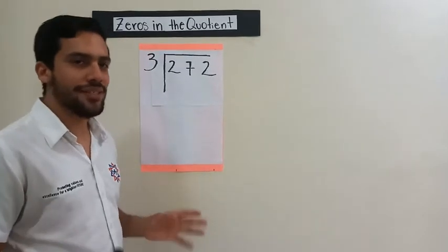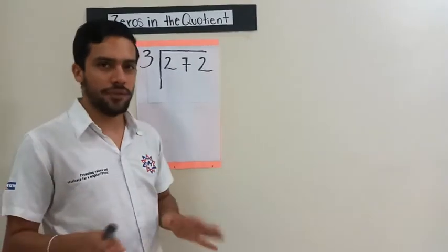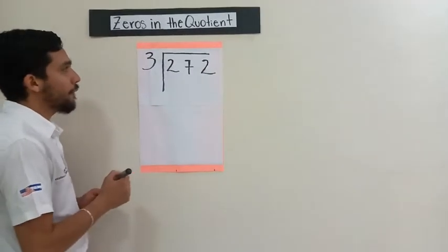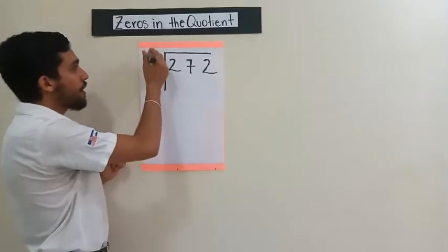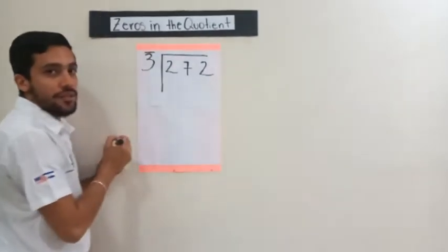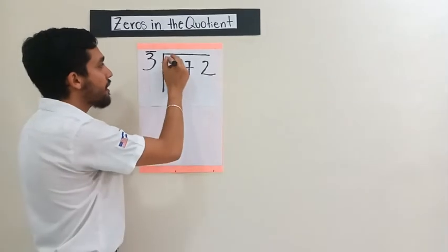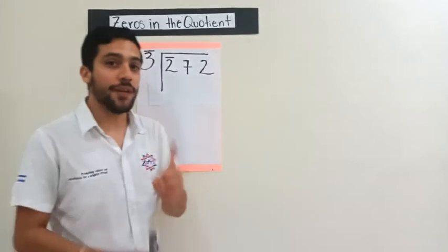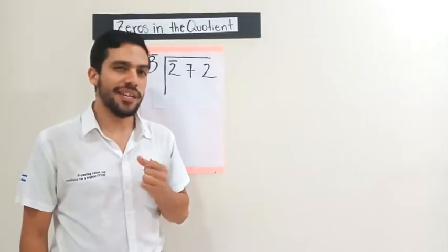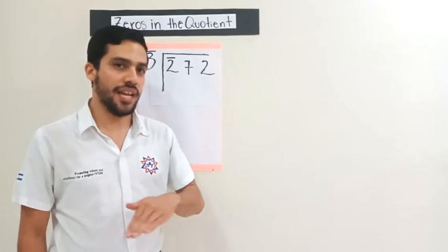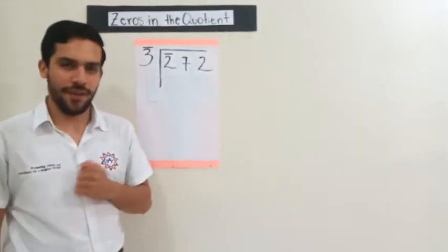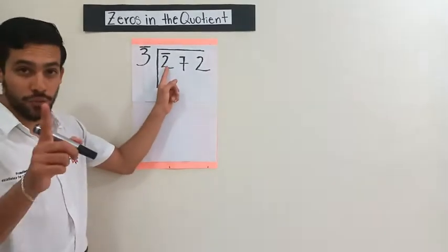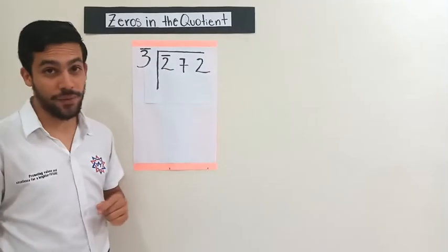This is the exercise that we're going to solve today. Just think about this. In first place, remember, we need to take 3 and we need to compare it with this number. I'm going to compare it with 2. Don't forget to ask yourself this question: Is 2 greater, less, or equal to 3? Well, in this case, you know that 2 is less than 3.